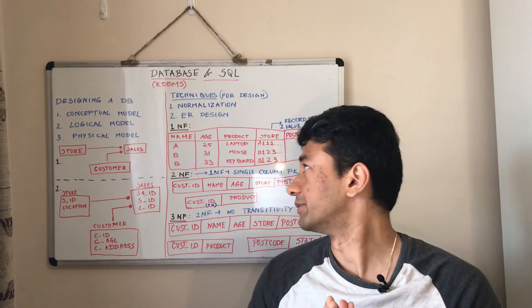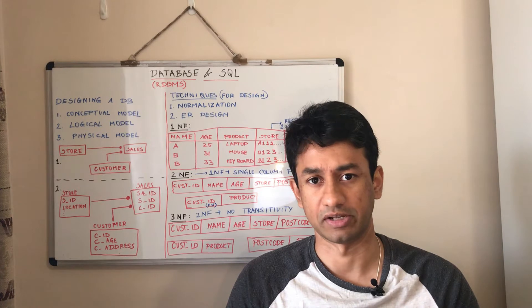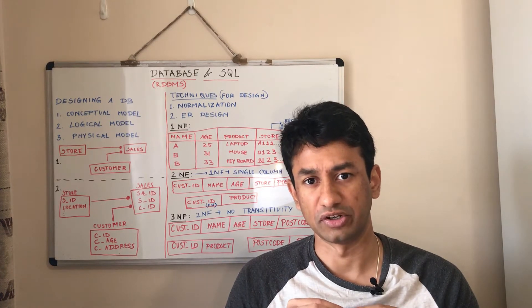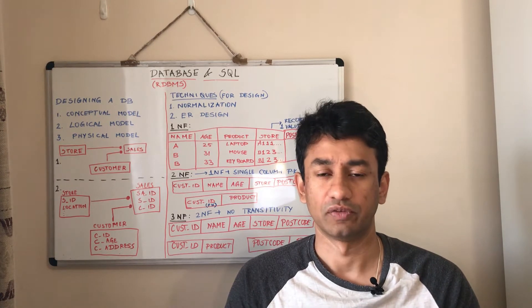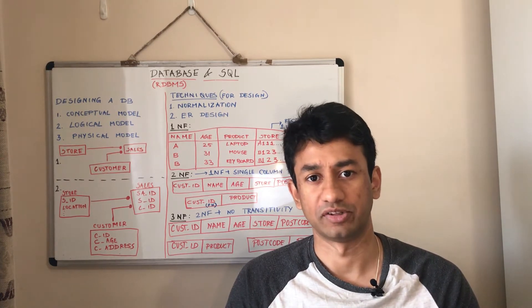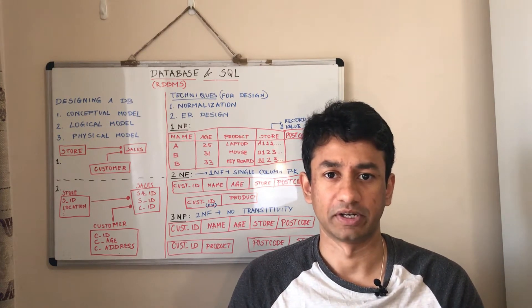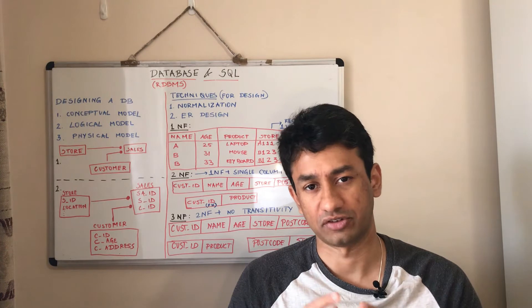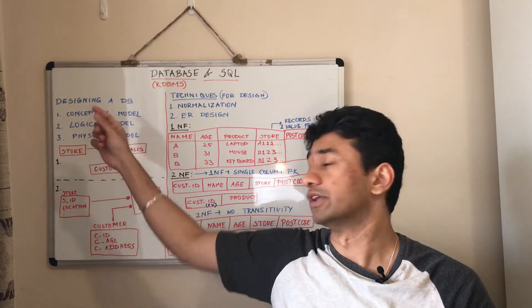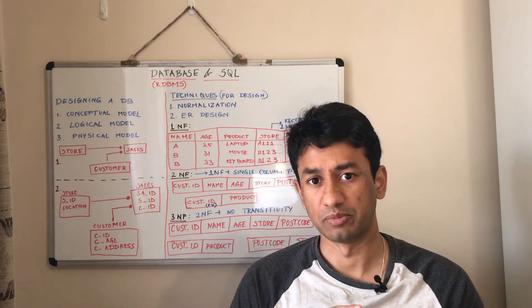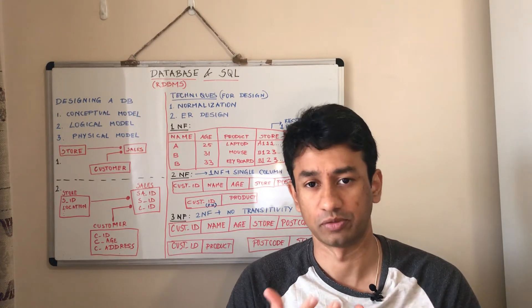Having said that, we are going to get into the details of a relational database. Before going into the query part — like how to build queries and how to select various data — we are going to see the high-level concepts behind designing or building a database. In order to build a database, there are three steps usually involved: the first is coming up with a conceptual model, then the logical model, and finally the physical model, which is the actual database itself.